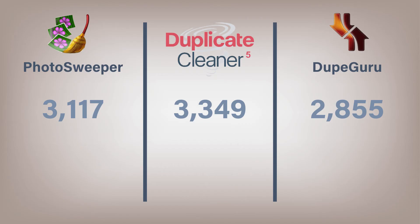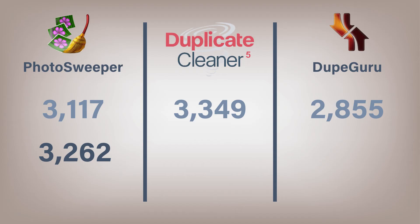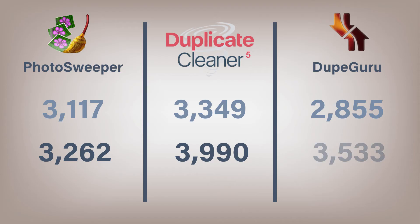Next, we have the very good match run, which is usually the level that I run these programs at, because with all the editing, cropping and rotating that we do with our photos, this is the best one to do. For Photo Sweeper, we can add a few extra photos and it then came up with 3,262. But Duplicate Cleaner Pro upped its game even more and gave us 3,730 photos plus the 260 videos, so a total of 3,990 duplicates. Then with a bit of a surprise jump comes DupeGuru, which gave me 3,533 — overtaking Photo Sweeper for how many duplicates it found.